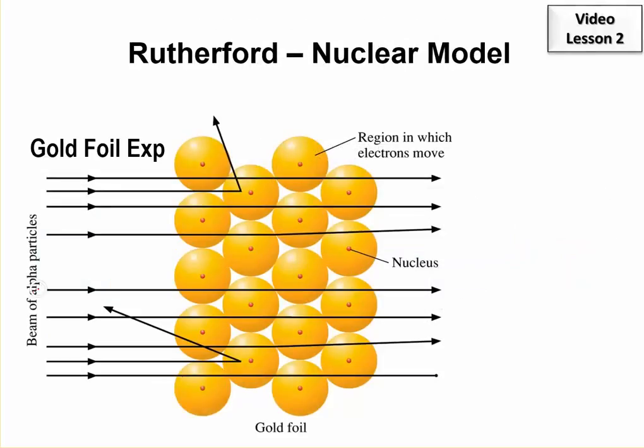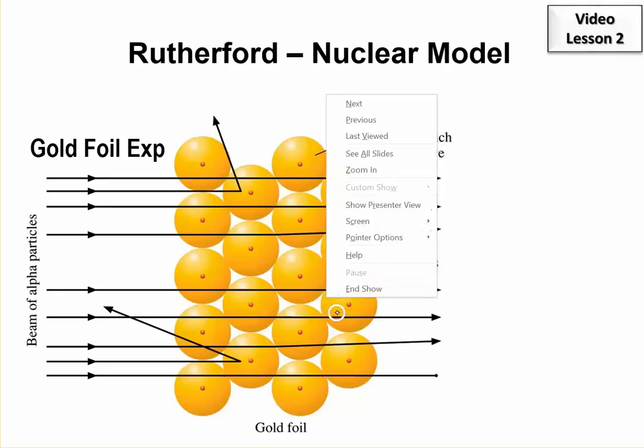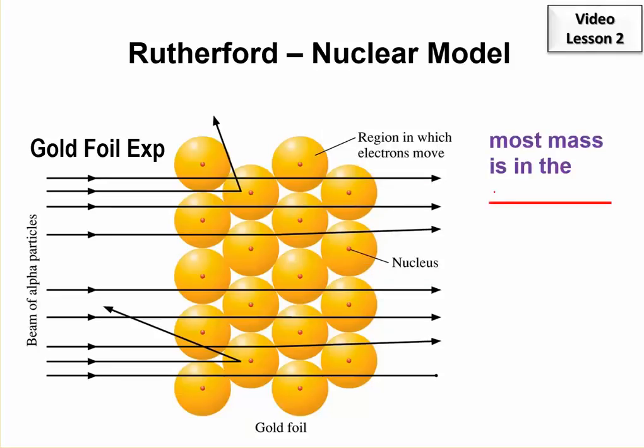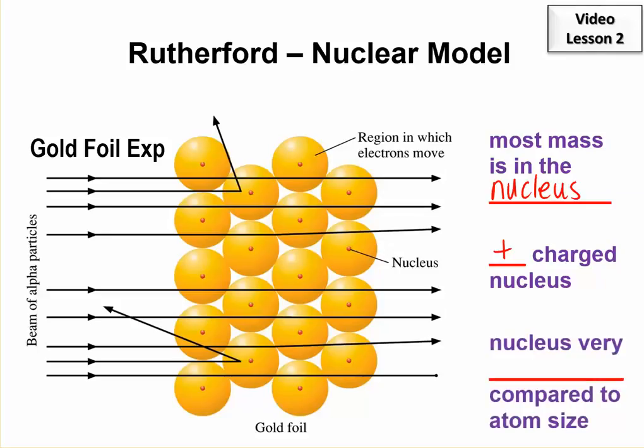Let's see how this worked. Here's the alpha particles coming in. You can see, like this one, that as it comes through, it doesn't hit a nucleus. Most of the outside of the atom is empty space. The nucleus has all the mass, or most of the mass. And it's very small compared to the size of the atom. Most of the mass is in the nucleus. The nucleus is positively charged. That's based on the alpha particles being positively charged, and how well they got repelled. There are a lot of calculations involved in all of this. The nucleus is very small compared to the overall atom size.